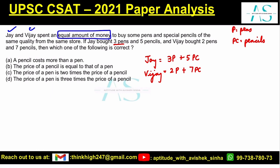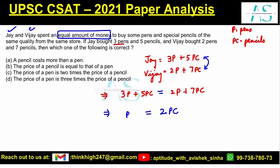Let's make an equation: 3P plus 5PC equals 2P plus 7PC. Solving this, 3P minus 2P gives us P, and 5PC moves to the other side, so P equals 2PC. This means one pen is equal in price to two pencils.